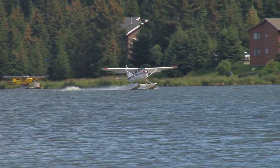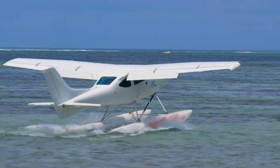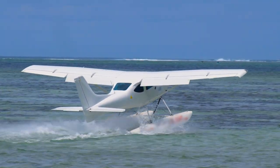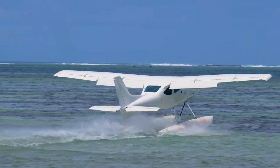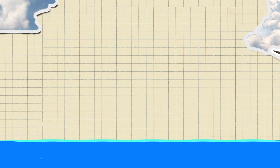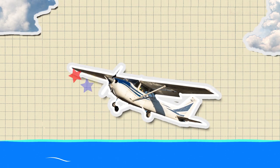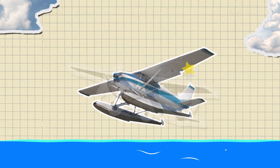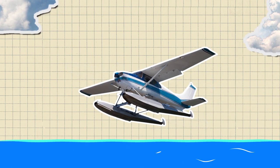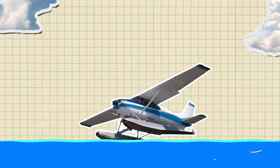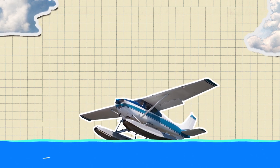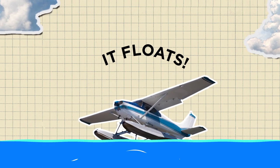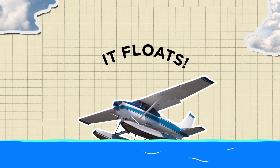The first type of seaplane is a float plane, and this is what people might typically think of when they think of seaplanes. The float plane has two long floats mounted underneath the fuselage that keep the airplane floating above the water. The floats are located where landing gear would normally be found.